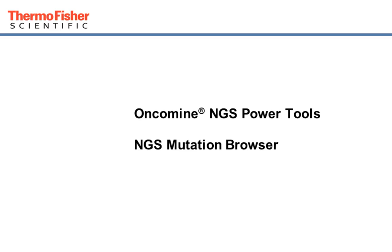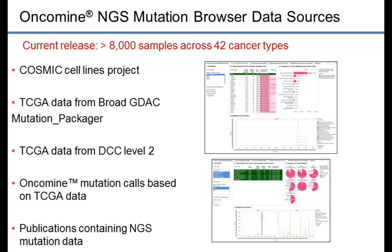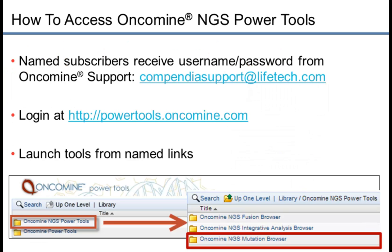Hello, my name is Jody McIntyre, and I'm an application scientist on the Oncomine platform. Today's video will be an introduction to the NGS Mutation Browser. The NGS Mutation Browser has data from multiple sources: the Cosmic Cell Lines Projects, TCGA, and also from publications containing NGS mutation data. To follow along with this video, you can log in at powertools.oncomine.com.